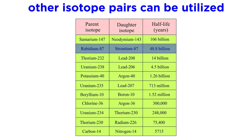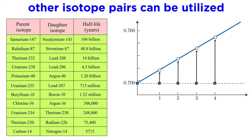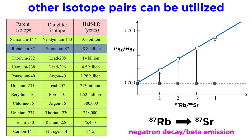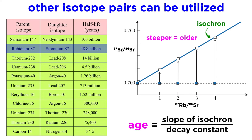There are other isotope pairs, such as rubidium-strontium and uranium-lead, where age is determined by analyzing the relevant isotopes of each mineral of a rock and graphing them. In the case of rubidium-strontium, rubidium-87 breaks down into strontium-87 through negatron decay, another way of saying beta emission. Here rubidium-87 is the parent isotope, strontium-87 is the daughter isotope, and strontium-86 is the non-radiogenic isotope of the daughter element. Making a graph with the strontium-87 to strontium-86 ratio on the y-axis and the rubidium-87 to strontium-86 ratio on the x-axis, and plotting the values for the various minerals contained in the rock, creates a straight line called an isochron. Steeper slopes indicate older samples, where more decay has occurred over a long period of time. The exact age can be determined by dividing the slope of the isochron by the decay constant. Furthermore, the y-intercept of the isochron gives the ratio of strontium-87 to strontium-86 at the time of crystallization.